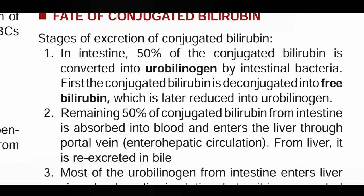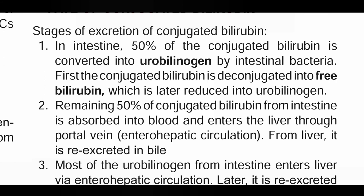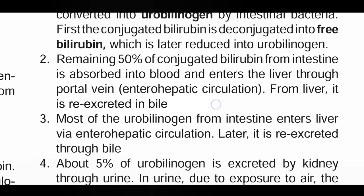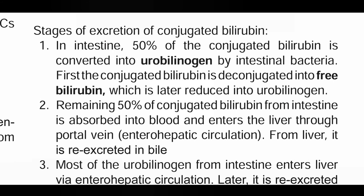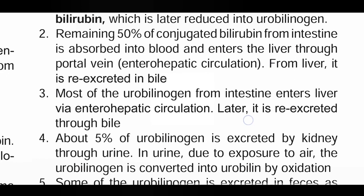In the intestine, 50% of conjugated bilirubin is converted into urobilinogen by intestinal bacteria. First, the conjugated bilirubin is deconjugated into free bilirubin, and then it is reduced into urobilinogen. So conjugated bilirubin does not directly form urobilinogen — it first forms free bilirubin, which is later reduced to urobilinogen.